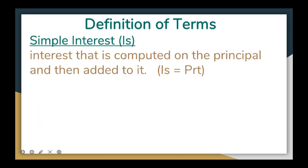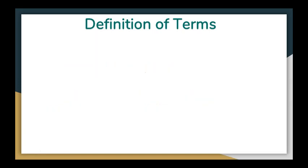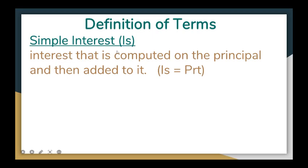Then we have simple interest. Simple interest is interest that is computed on the principal and then added to it. The formula is: simple interest IS is equivalent to the principal times the rate times time (IS = P × R × T). For the maturity value or future value, denoted by capital letter F, that is the amount after T years — the amount the lender receives from the borrower on the maturity date.